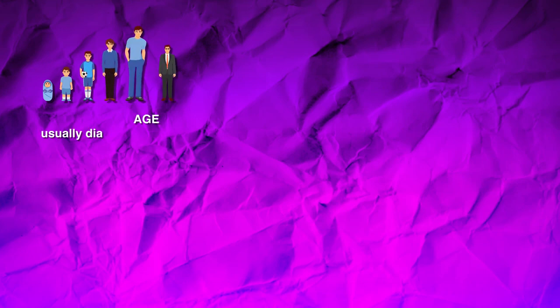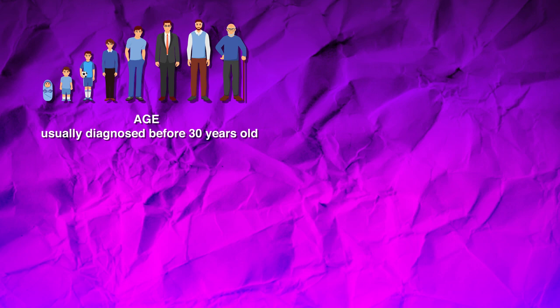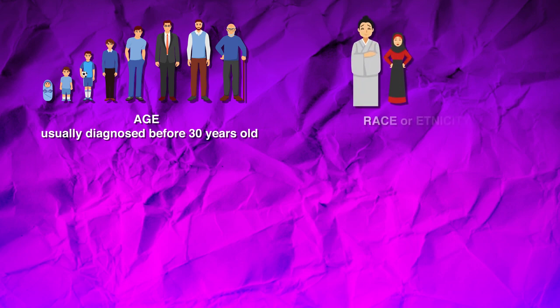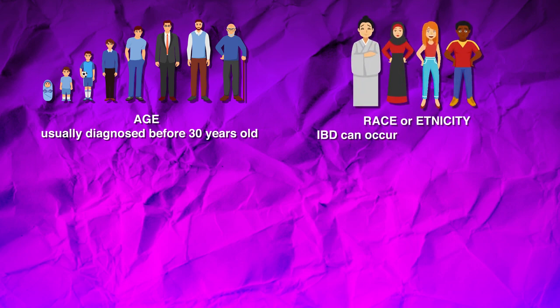Age: most people who develop IBD are diagnosed before they're 30 years old. Race or ethnicity: IBD can occur in any race, although if you are of specific descent, such as Ashkenazi Jewish descent, your risk might be higher.